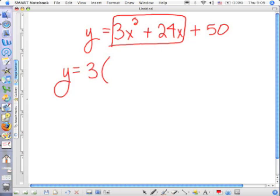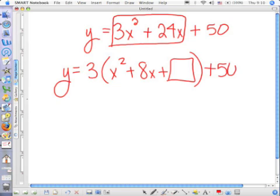So, if I factor out a 3, it leaves me with x squared plus 8x. Correct? And I'm going to want to complete this. I still have my plus 50.